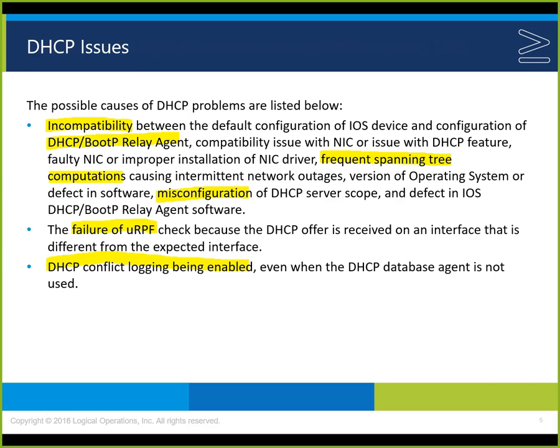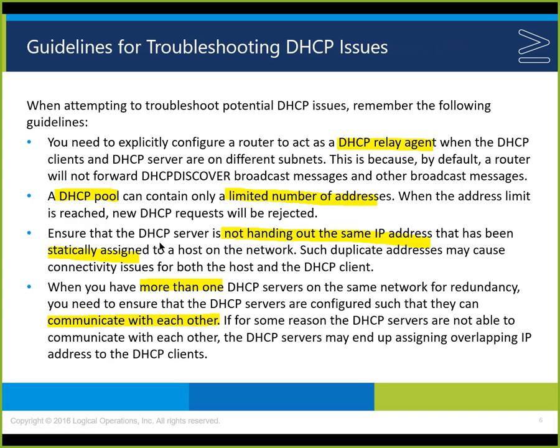Reverse path forwarding checks the reverse path to be sure the request is coming from the expected interface. DHCP conflict logging is enabled even when the DHCP database agent is not used. When we do DHCP snooping, the system maps the IP address, the interface, and the MAC address together, giving us more assurance that the correct IP addresses are assigned to the correct devices.